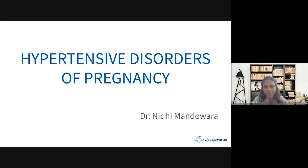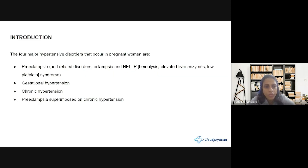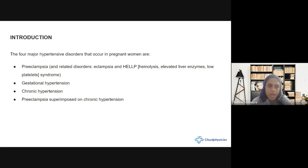Good morning. Today we are going to discuss the hypertensive disorders that we see in pregnancy. The four major hypertensive disorders in pregnant women are: preeclampsia and the related disorders — eclampsia and HELLP syndrome — gestational hypertension, chronic hypertension, and preeclampsia superimposed on a patient who was already having chronic hypertension.